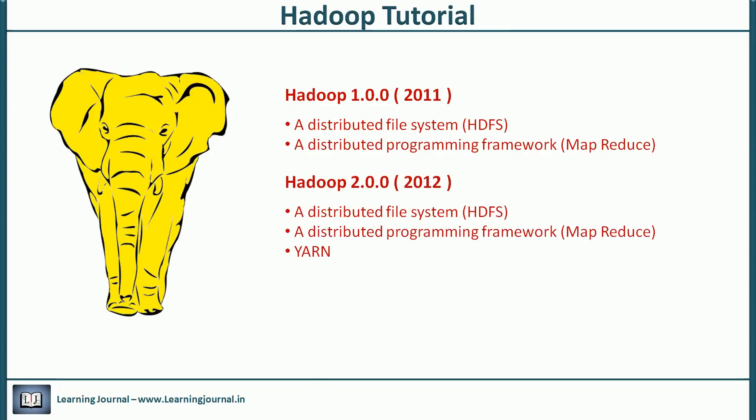The open source community released Hadoop 2.0 in May 2012. With this version, they added another core component — YARN. As we stand today, Hadoop 3.0 Alpha 2 is out as of January 2017. However, there is no new core component introduced in this release. In upcoming videos, we will learn about these three main parts and will cover Hadoop 2.x and relevant features introduced in Hadoop 3.x.